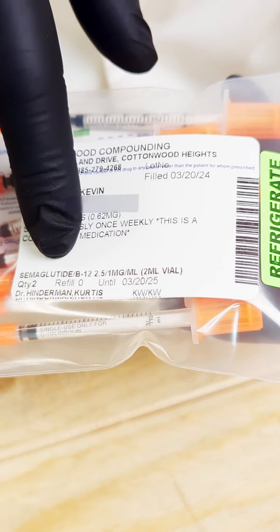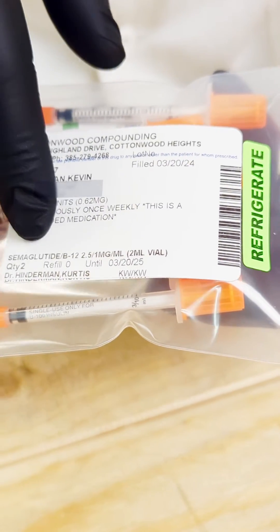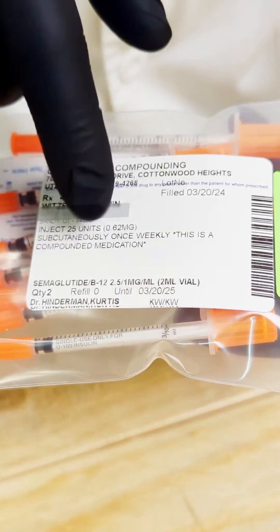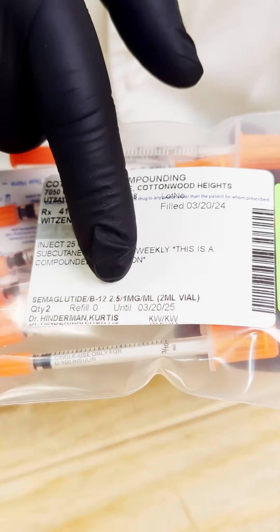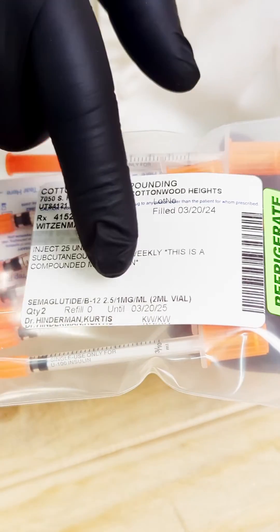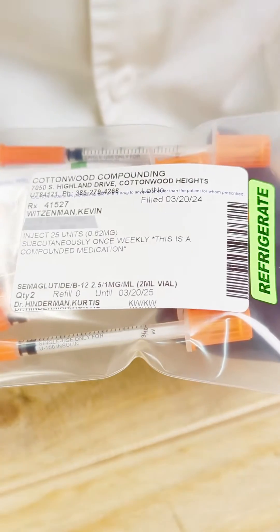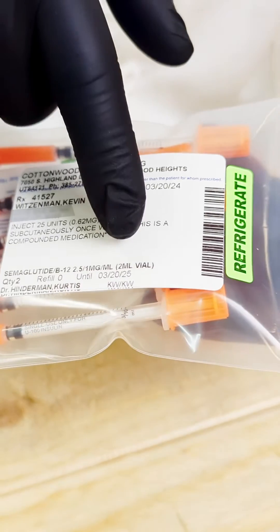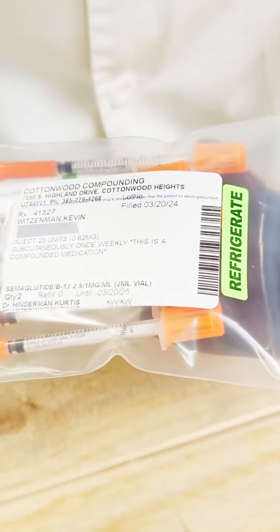You'll have the medication itself, it has to be listed out in active ingredients. So, semaglutide, B12, and then the numbers at the end of it, 2.5 relates back to the semaglutide, 1 milligram relates back to the B12 and that's per ml. And then this medication itself is a 2 ml vial.